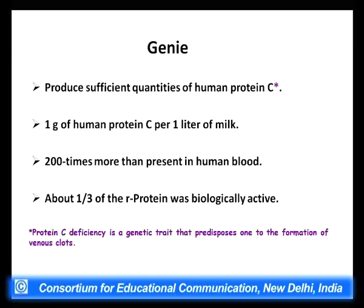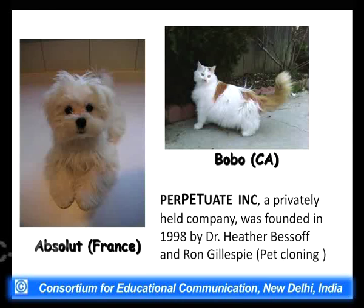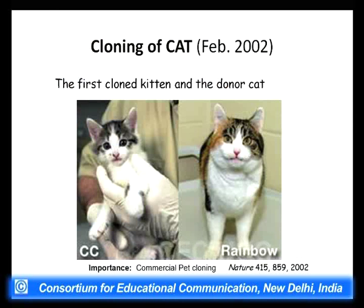Human protein C deficiency is a genetic trait that predisposes one to the formation of various clots in the blood. Through Genie's milk, one gram of human protein C could be extracted from one liter of milk — almost 200 times more than what could be taken from one liter of human blood. About one third of this recombinant protein is biologically active. This is a big boon to the industry. Regarding the pet cloning project, you can visit Perpetuate Incorporation's website and actually order to clone your pet.